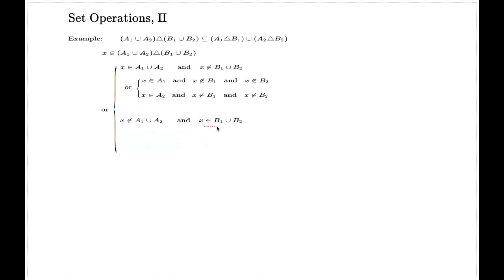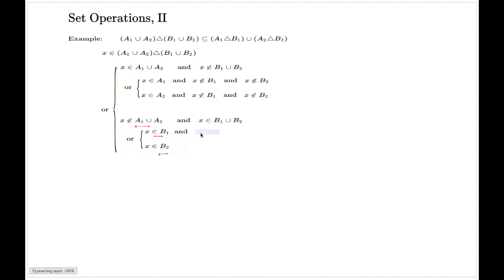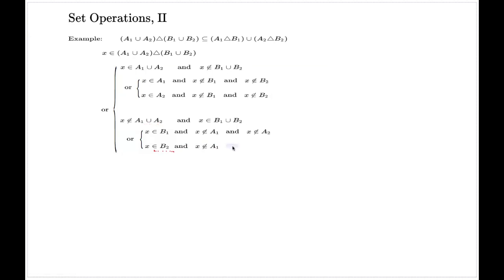The second main branch means that either X belongs to B1 or X belongs to B2. On both occasions, the condition will be that X doesn't belong to A1 and X doesn't belong to A2. The same story applies to the second branching: X doesn't belong to A1 and X doesn't belong to A2.